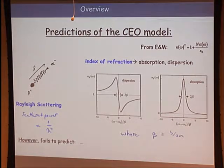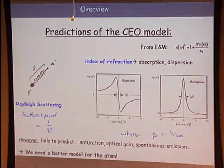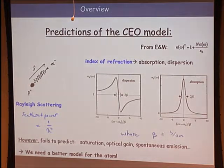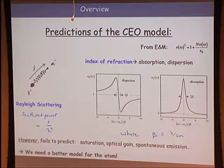However, the classical model fails to predict some important things. It fails to predict saturation of absorption—it continues to scatter light no matter how hard you drive the atoms. There's no mechanism for optical gain and nothing related to spontaneous emission. Fundamentally, we have no model of the atom and no discrete energy levels. To describe these phenomena, we need a more realistic model for the atom.